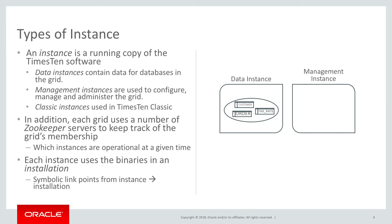In addition to X10 instances, each grid uses the services of a ZooKeeper cluster to keep track of the grid's membership. ZooKeeper is an open source product from Apache. It's used by X10 as a membership service — it keeps track of which instances in the grid are operational at a given time. In X10 18.1, each instance of X10 uses the binaries in an X10 installation. You untar the X10 distribution into a directory, you get an installation, and from the binaries in that installation, you create an instance.